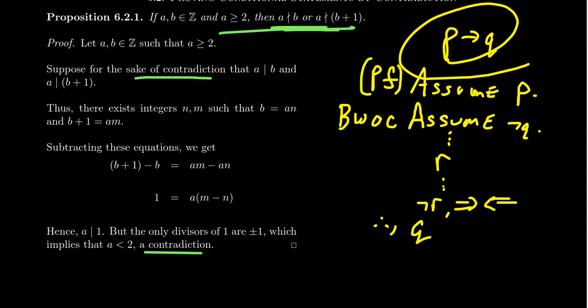When you've told the reader you're proving by contradiction and you find the contradiction, there's no need to go further. It should be clear to the reader: you found the contradiction, therefore the proof follows. This is a valid proof argument; you can stop at that moment.